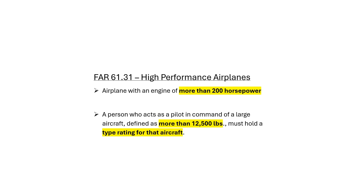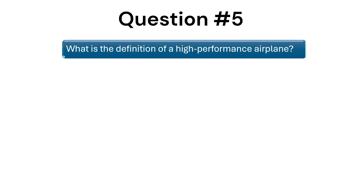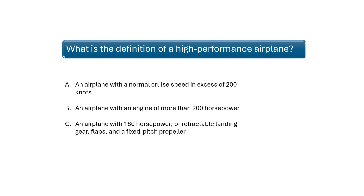High performance airplanes: a high performance airplane is any airplane with an engine of more than 200 horsepower. A large aircraft is defined as anything more than 12,500 pounds, and pilots must hold a type rating for that aircraft. A high performance airplane is any airplane with a horsepower of more than 200.